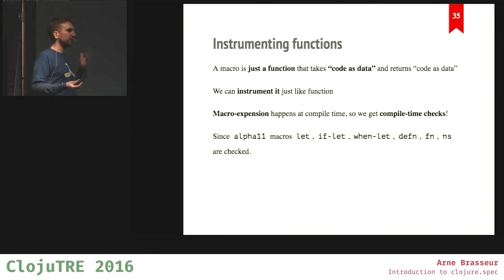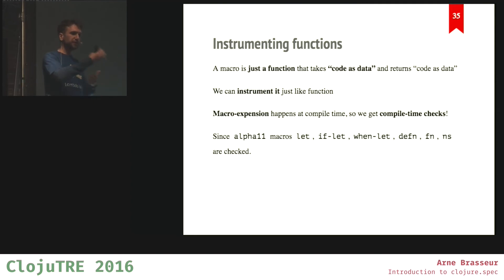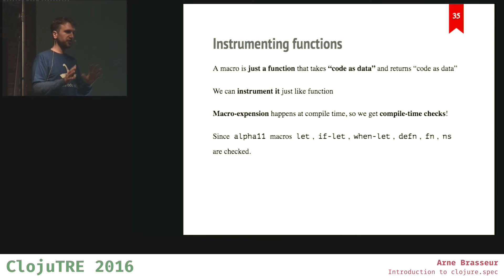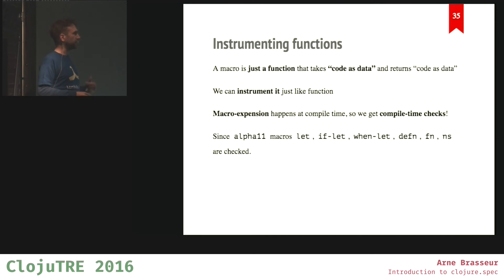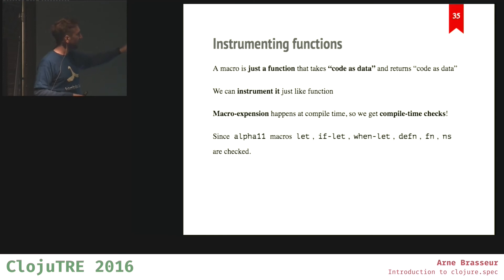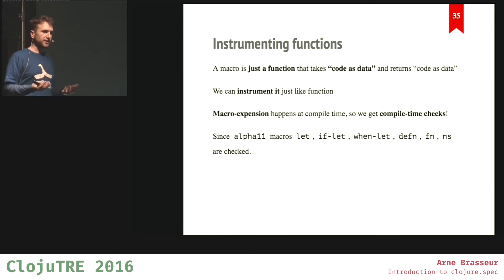Macros are really just functions that run earlier to transform part of your syntax tree, so you can instrument those as well — writing specs for what shape needs to go in and what comes out. Since alpha 11, Clojure already contains specs for let, if-let, defn, and ns. You just turn on instrumentation and automatically get checks for all of that.